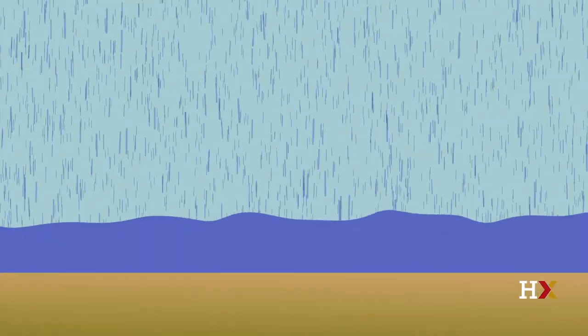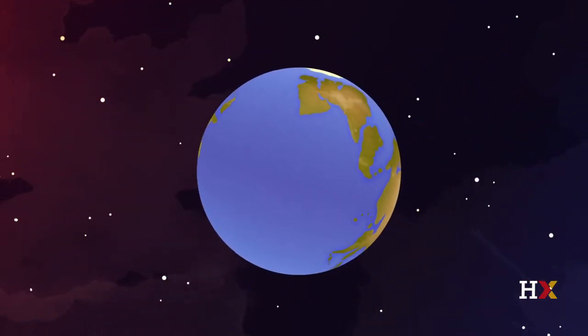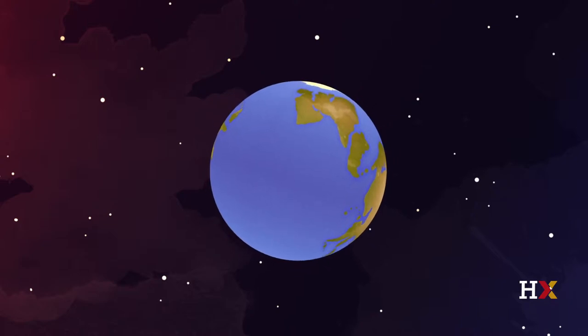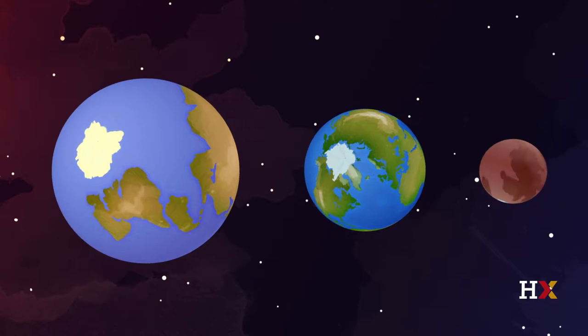As the planet cools even further, atmospheric water vapor becomes liquid and rains down onto the planet. Seas and lakes develop. Because the planet is in its star's habitable zone, most of that water will remain liquid, though the planet may develop ice caps like our own or the ones on planet Mars.